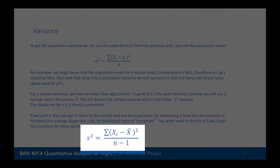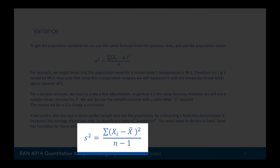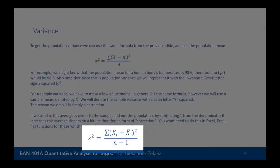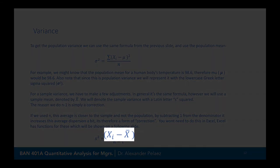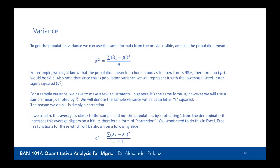For sample variance, we make a slight adjustment. The formula is the same, but instead of dividing by n, we divide by n minus one. This correction is needed because a sample's variance tends to be slightly off from the population variance, and dividing by n-1 inflates the sample variance to correct for this. We take each observation, subtract the sample mean (x̄), square it, add them all together, and divide by n-1. This is denoted as s² (a Latin letter, indicating a sample statistic).